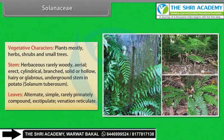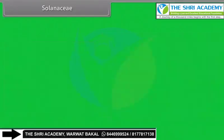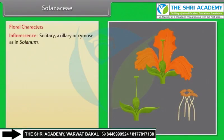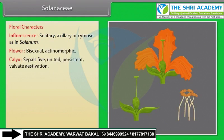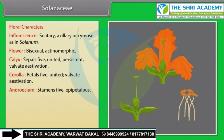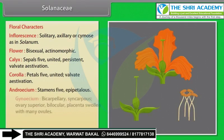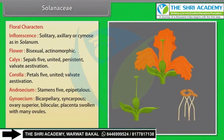Leaves: alternate, simple, rarely pinnately compound, exstipulate, venation reticulate. Floral characters: inflorescence solitary axillary or cymose as in Solanum. Flower bisexual, actinomorphic. Calyx: 5 sepals, united, persistent, valvate aestivation. Corolla: 5 petals, united, valvate aestivation. Androecium: 5 stamens, epipetalous. Gynoecium: bicarpellary, syncarpous, ovary superior, bilocular, placenta swollen with many ovules. Fruits: berry or capsule. Seeds: many, endospermous.